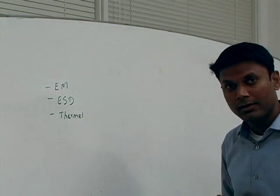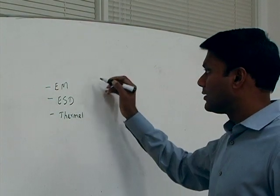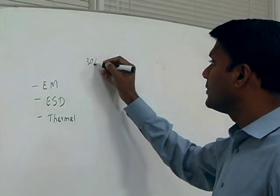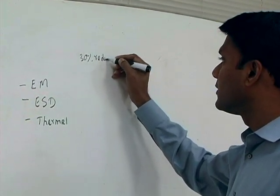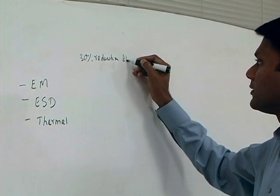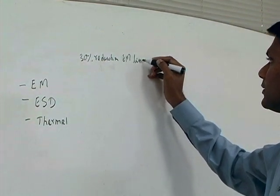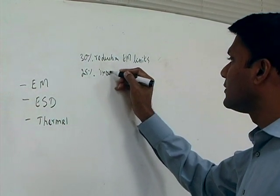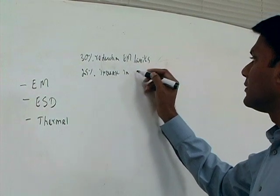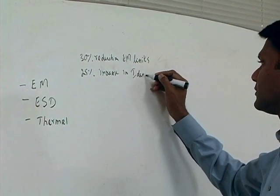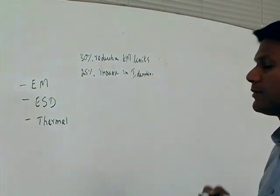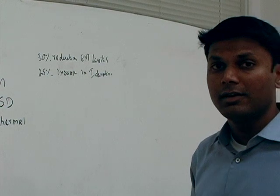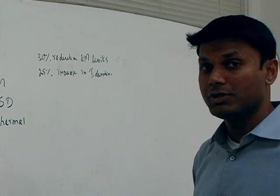On the EM side, our interconnects have 30% lesser margin — so you have a 30% reduction in EM limits — and you have a 25% increase in current densities. So basically, as we decrease our EM limits and increase our current density, we are faced with a huge EM problem.